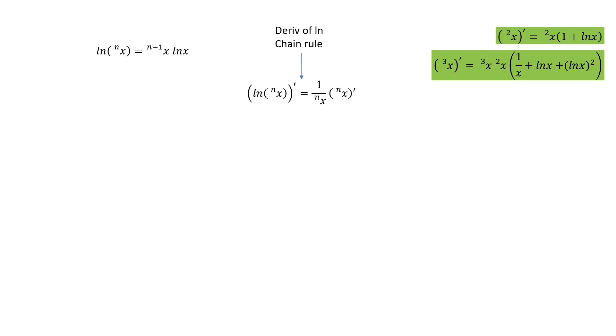Once again, we get the derivative of the natural log of a function of x equals 1 over the function of x times the derivative of the function. Wow, that's a mouthful. Let us take the derivative of the log power rule for our nth tetration of x.